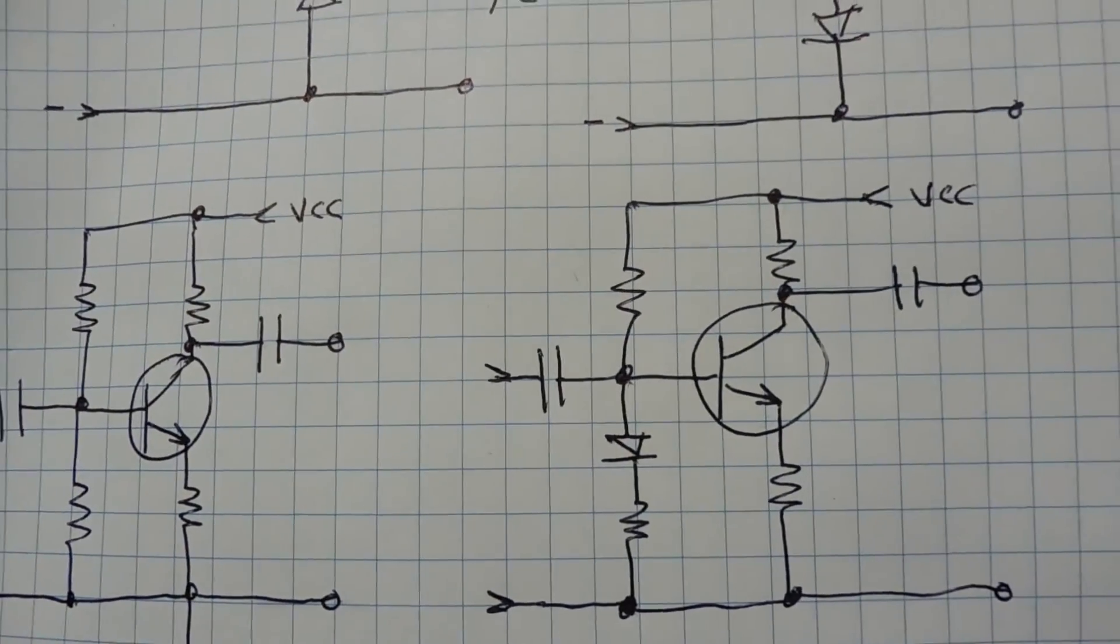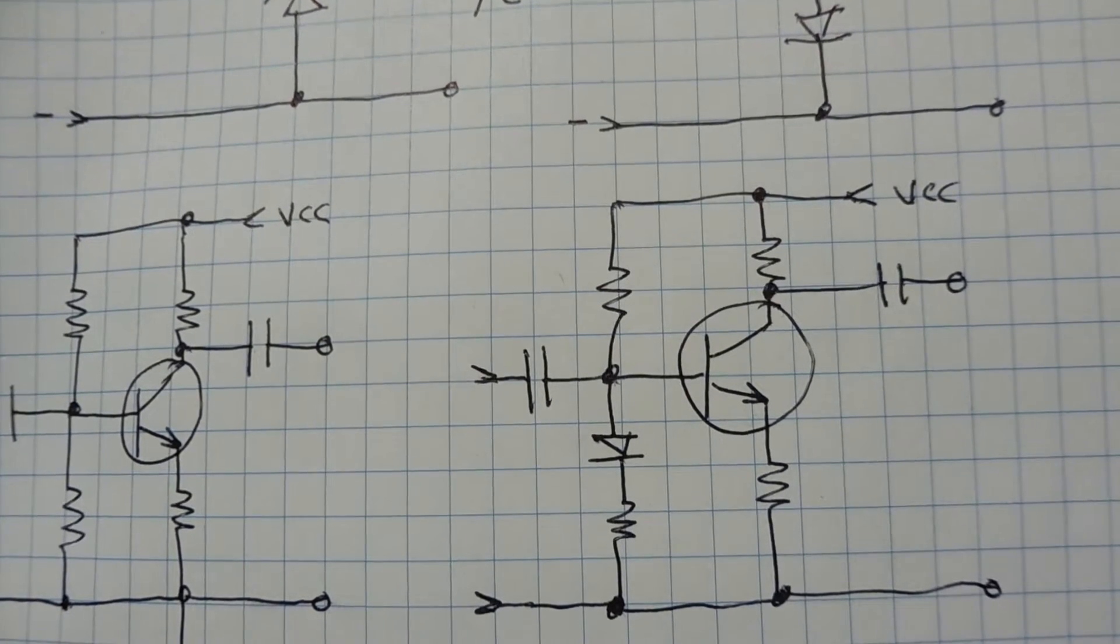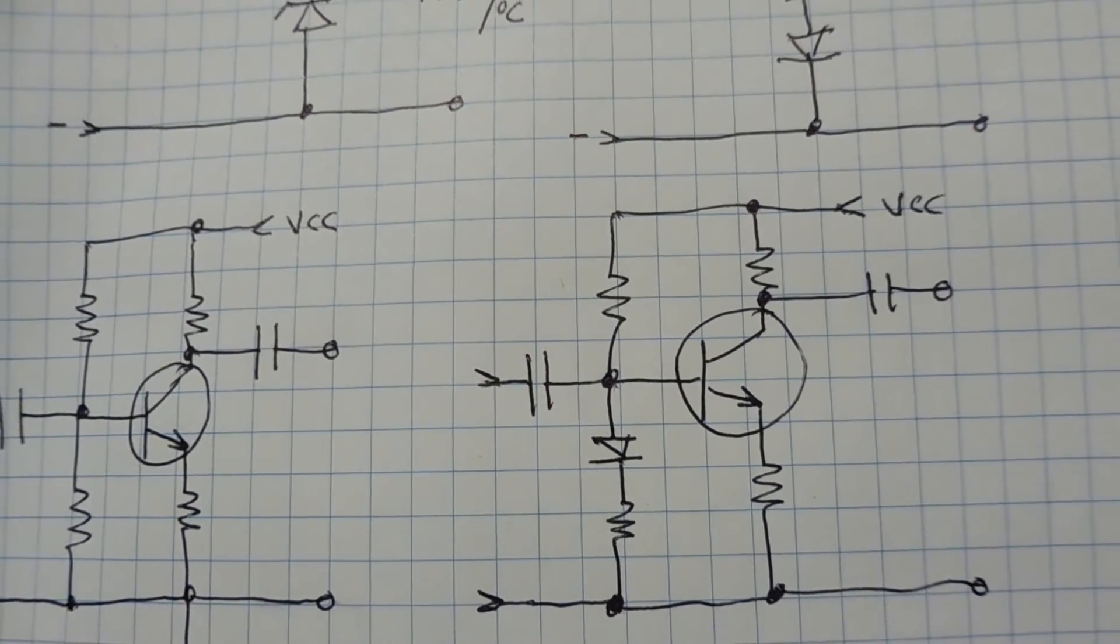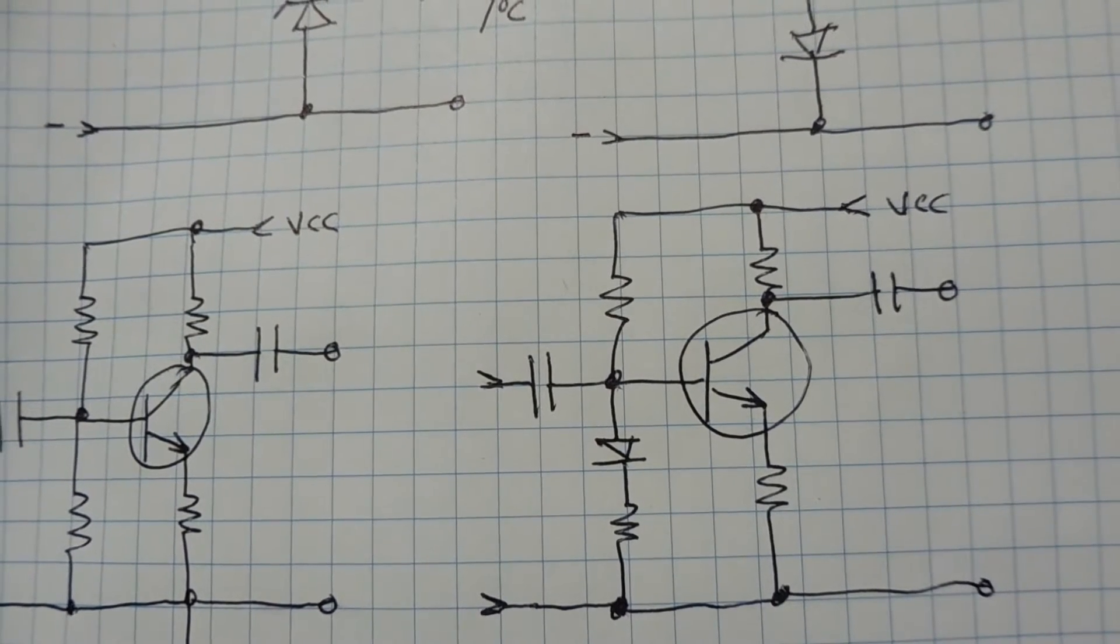We could add a diode which will compensate the circuit. As the temperature increases, it will keep the Q point centered. So we can use diodes for temperature sensing and also for temperature compensation.